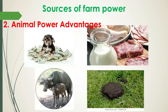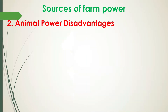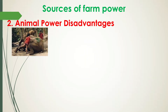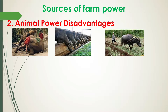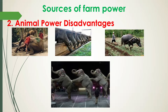Using animals as a power source also has disadvantages. These include: animals have limited daily working hours, animals need feeding and protection against pests and disease, slow speed, high man-to-power ratio, and limited range of working conditions.